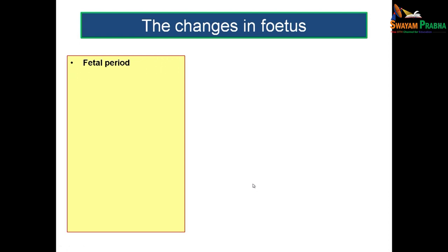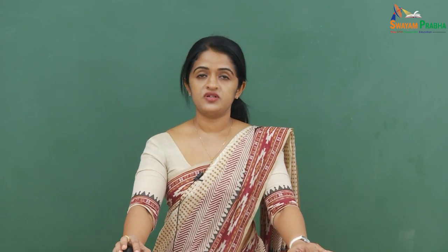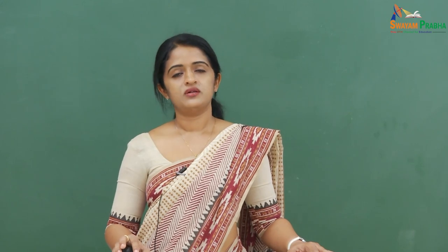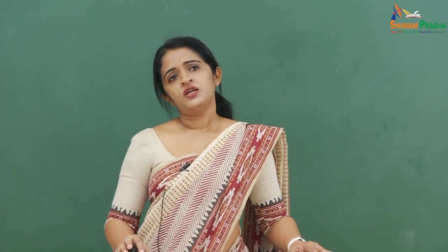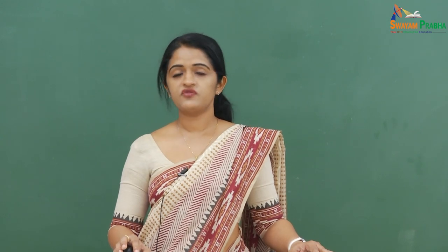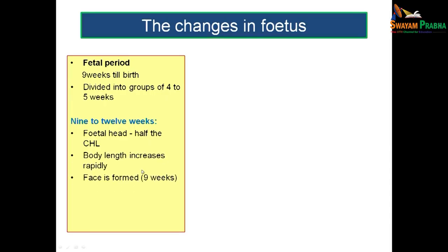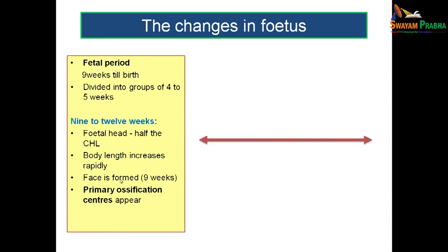The fetal period runs from 9 weeks of intrauterine period till birth. Dividing it into groups of 4 to 5 weeks: from 9 to 12 weeks, the fetal head is almost half the crown heel length, body length increases rapidly, the face is formed, and primary ossification centers appear.